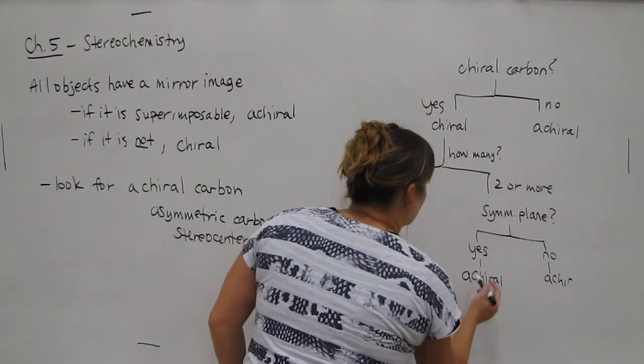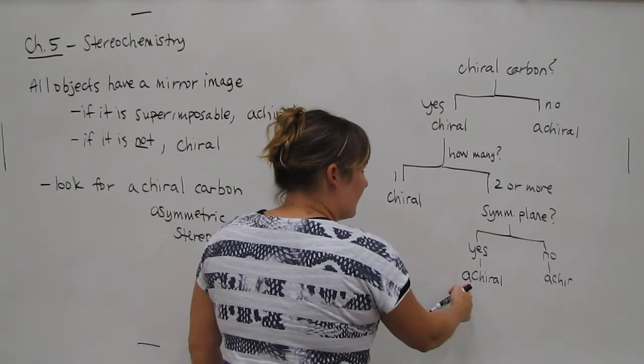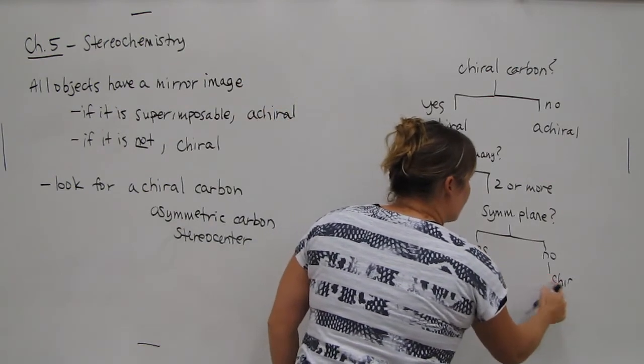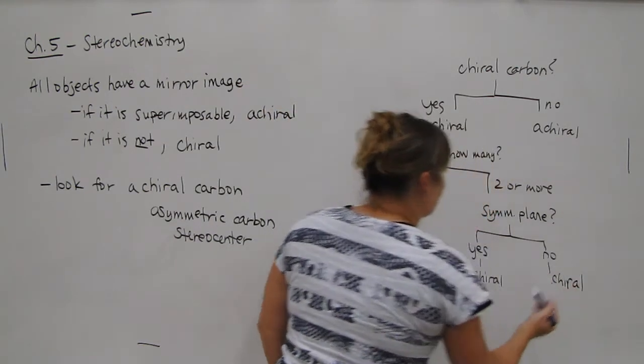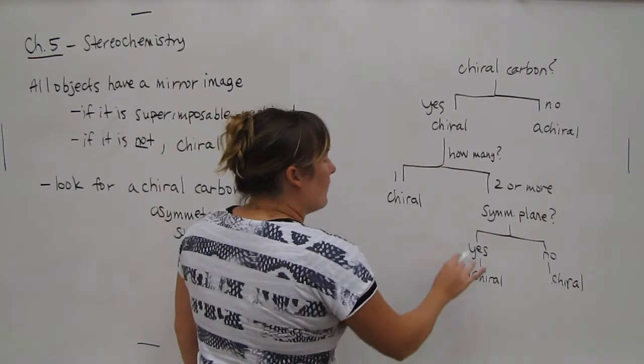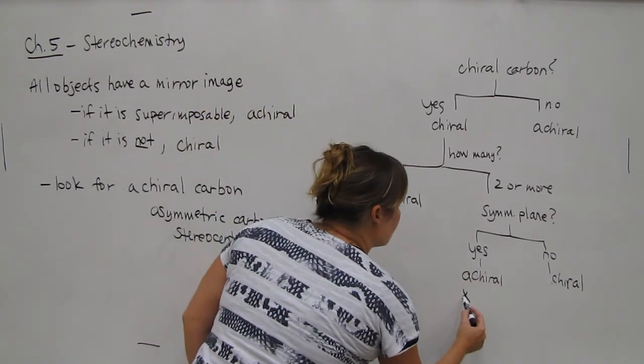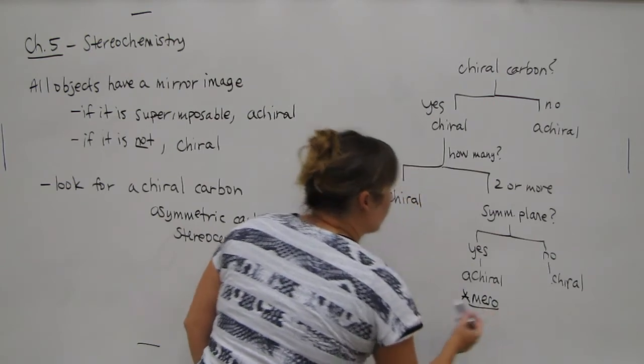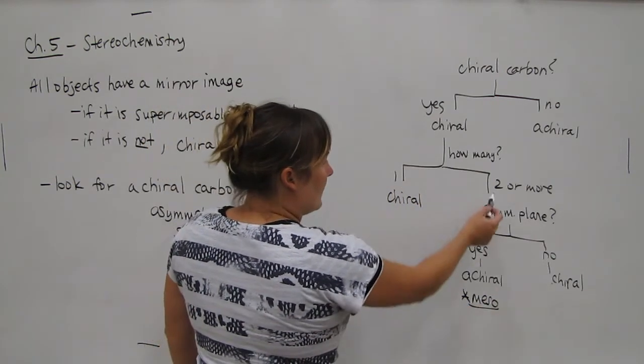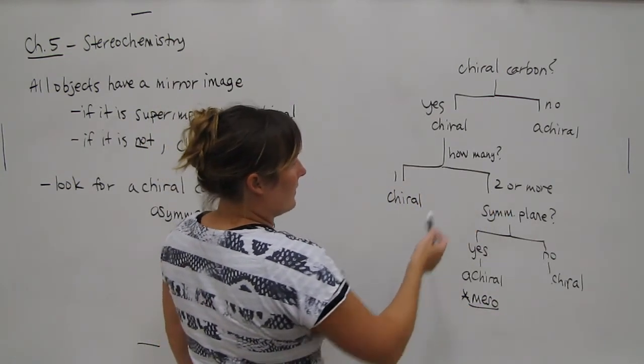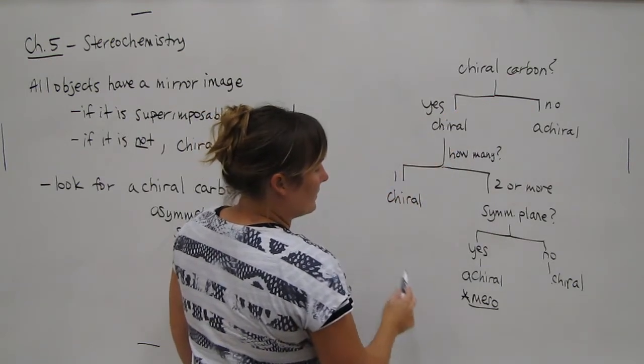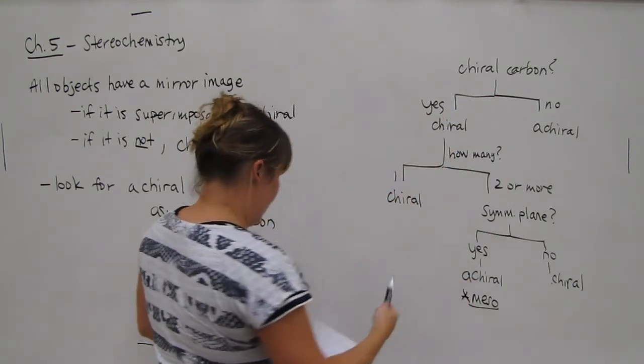If your answer is no, then your molecule is chiral. And there was a special name for this case known as meso. So meso has two or more stereocenters, or chiral carbons, yet the whole molecule is achiral.